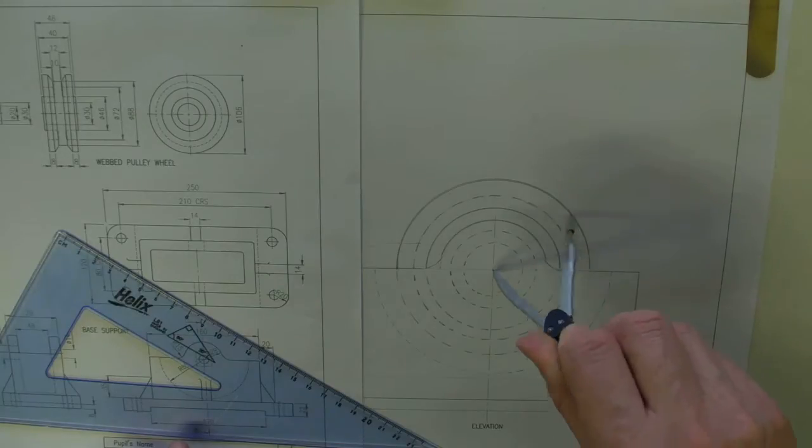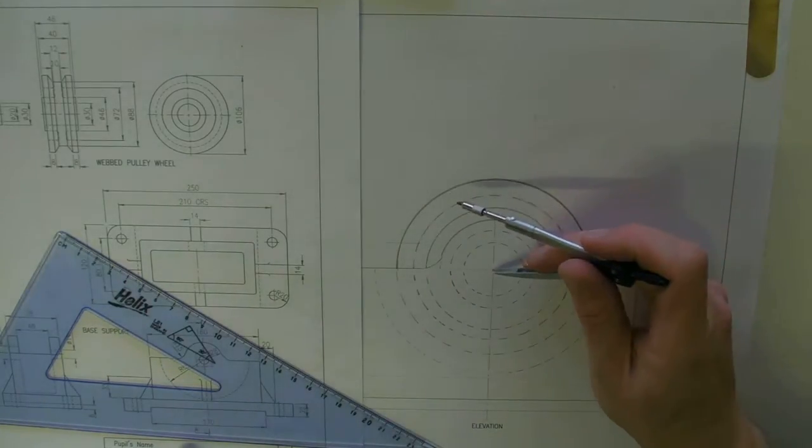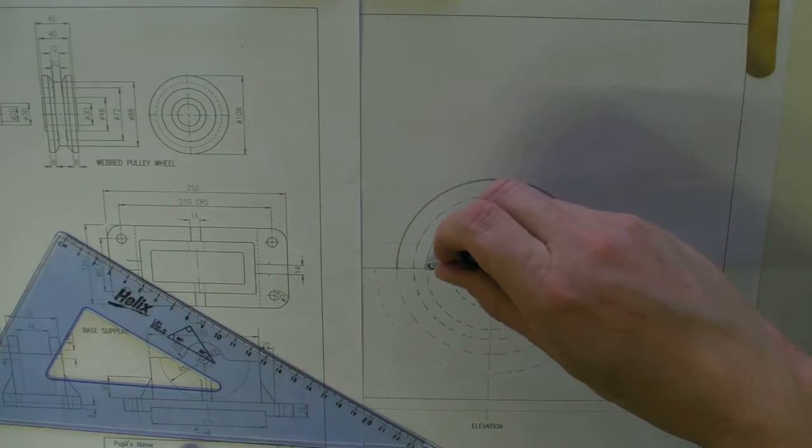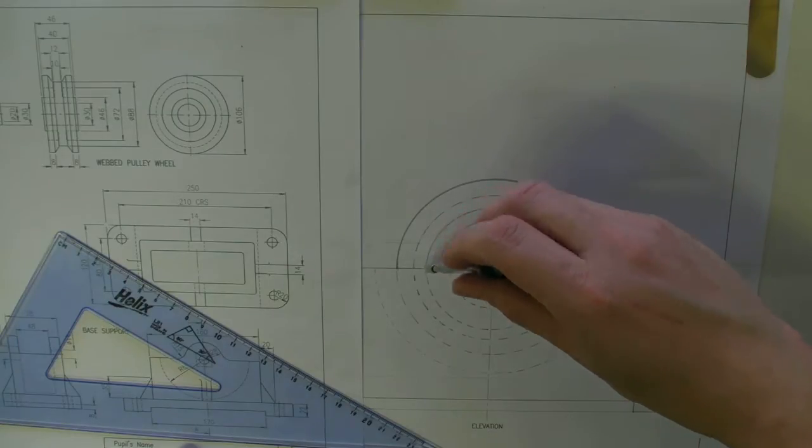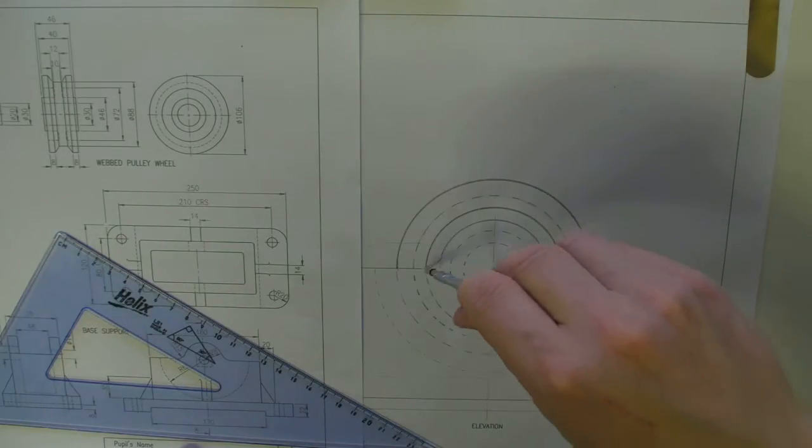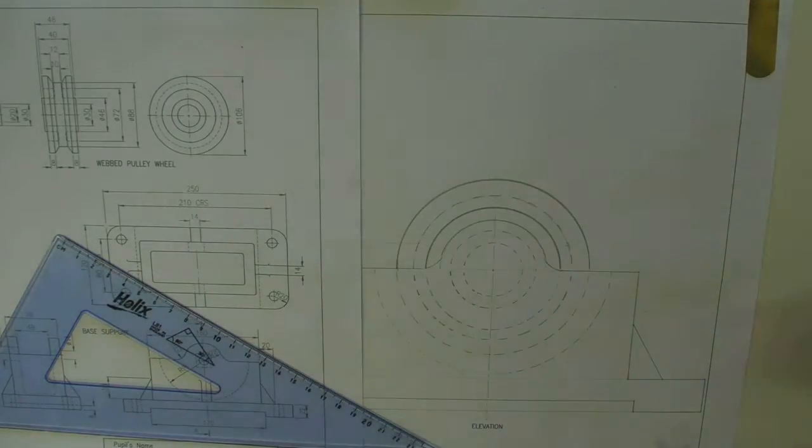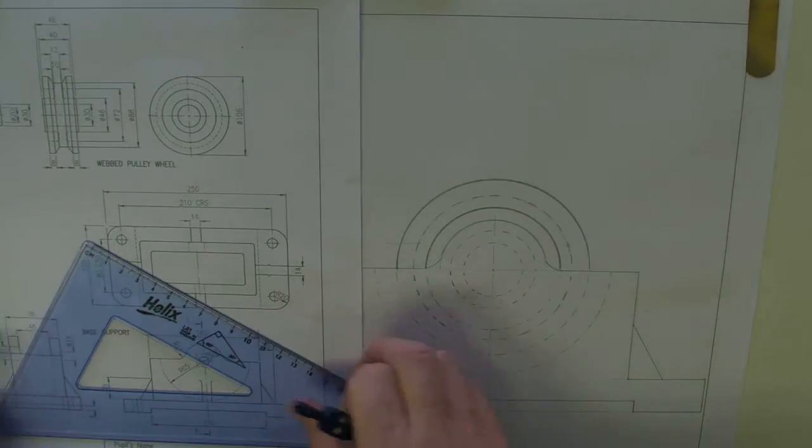So that we can kind of clearly see that that's an outline. And then make this one darker, which is the other one that we can see. And just so that it sets it apart from the hidden detail lines. Okay, so you can see that a bit better now. So we've got the pulley in place.